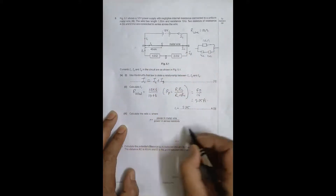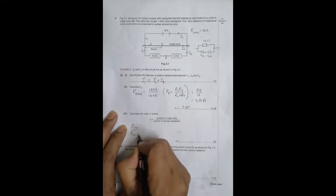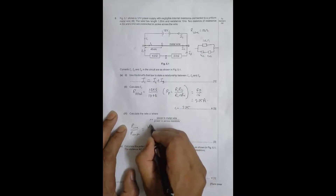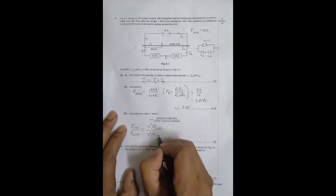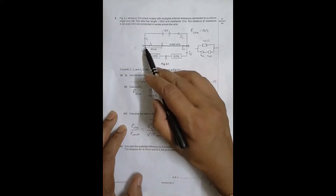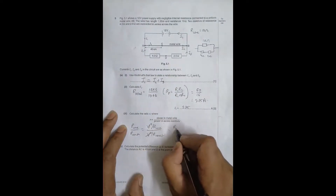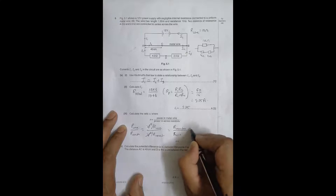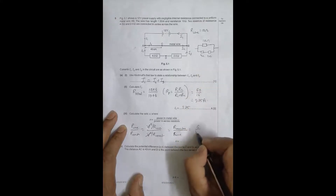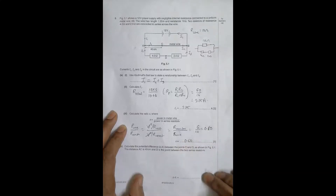Next, we calculate the ratio x, where x = power in metal wire / power in resistors. Since both the wire and resistors share the same potential difference V = 12 volts, P = V²/R. The V² terms cancel, giving x = R_resistors / R_wire = 6 / 10 = 0.60. So x = 0.60.